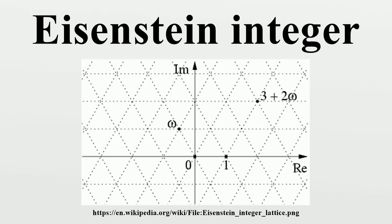The Eisenstein integers form a triangular lattice in the complex plane, in contrast with the Gaussian integers, which form a square lattice in the complex plane. Properties.